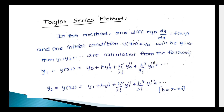Next: Taylor series method. In this method, one differential equation is dy/dx = f(x, y) and one initial condition is y(x₀) = y₀. The Taylor series method finds y₁, y₂ calculated as follows: y₁ = y(x₁) = y₀ + h·y₀' + (h²/2!)·y₀'' + (h³/3!)·y₀''' + and so on.